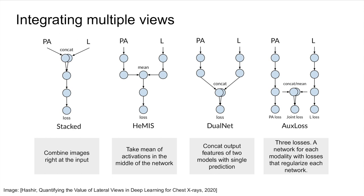We can also train a model on a subset of views. Another approach called DualNet is to run independent networks completely and then concatenate their feature representations, having only a single linear classifier at the end. However, when training this approach, if a single view is predictive, then the model might ignore the other views and their potential benefits. An approach to deal with this is called AUX loss, where three losses are minimized simultaneously. Independent losses ensure that each view is not ignored.